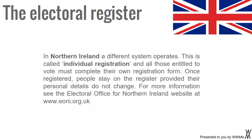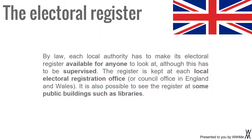Once registered, people stay on the register provided their personal details do not change. For more information, see the Electoral Office for Northern Ireland website at www.eoni.org.uk. By law, each local authority has to make its electoral register available for anyone to look at, although this has to be supervised. The register is kept at each local electoral registration office or council office in England and Wales. It is also possible to see the register at some public buildings such as libraries.